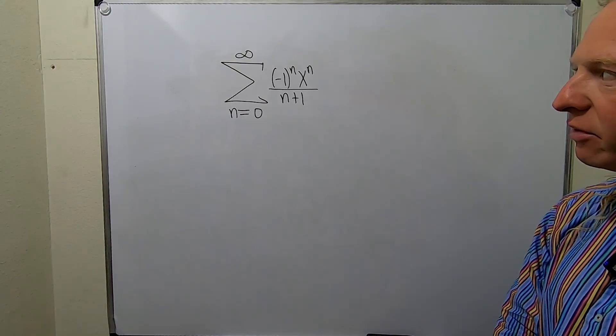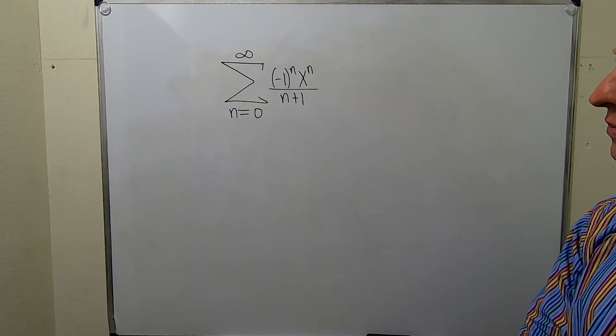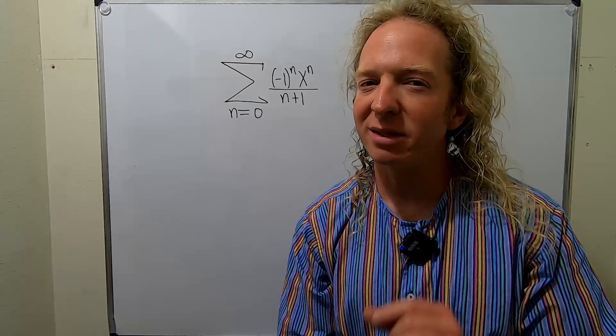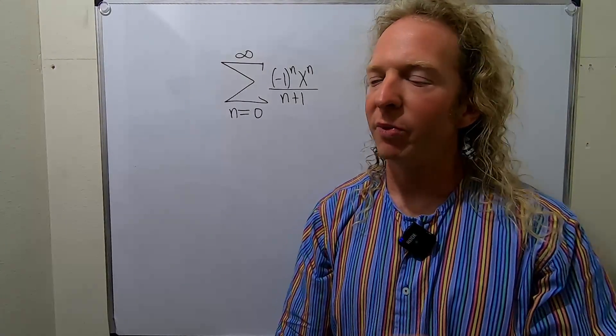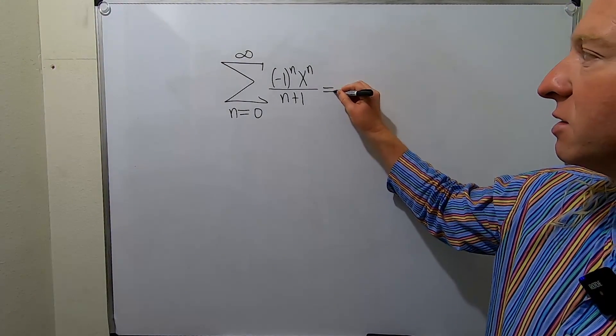In this problem we have to find the radius of convergence of this power series. The first thing to notice is that the center of this power series is zero. You can notice that by rewriting this as follows.